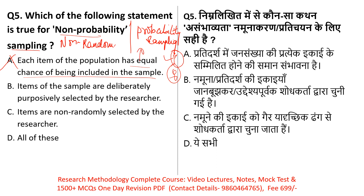Option B: 'Items of samples are deliberately and purposefully selected by the researcher.' In non-probability sampling, the researcher does deliberately choose samples. However, the key point is that in non-probability sampling, the researcher doesn't give every member of the population an equal chance. The researcher purposefully selects those from whom they can get useful information.